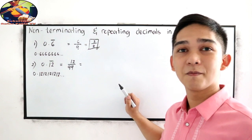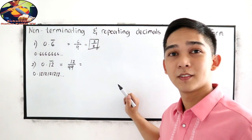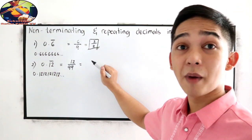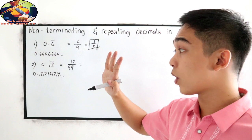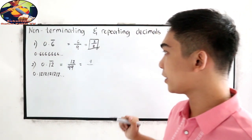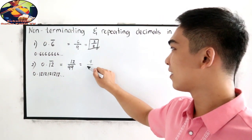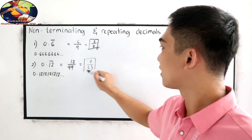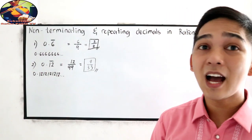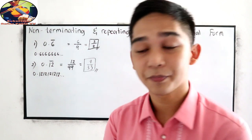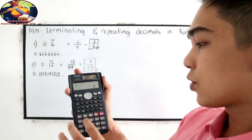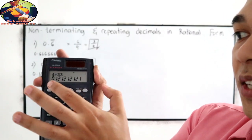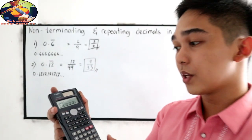12 over 99 is divisible by 3: 12 divided by 3 is 4, and 99 divided by 3 is 33. So 4 over 33. Let us check using our calculator: 4 divided by 33 equals 0.1212121212121.